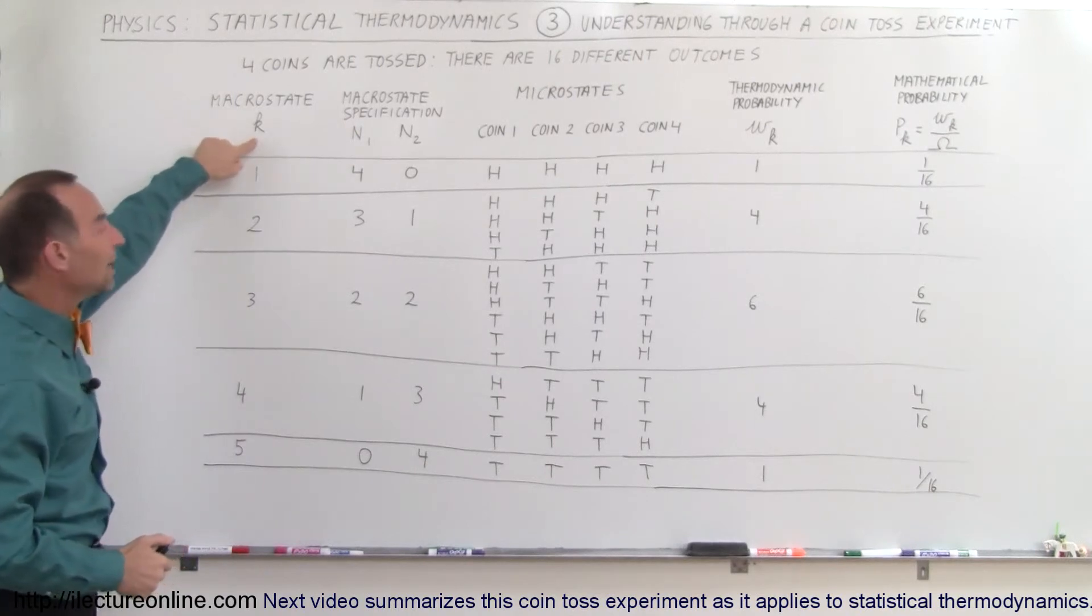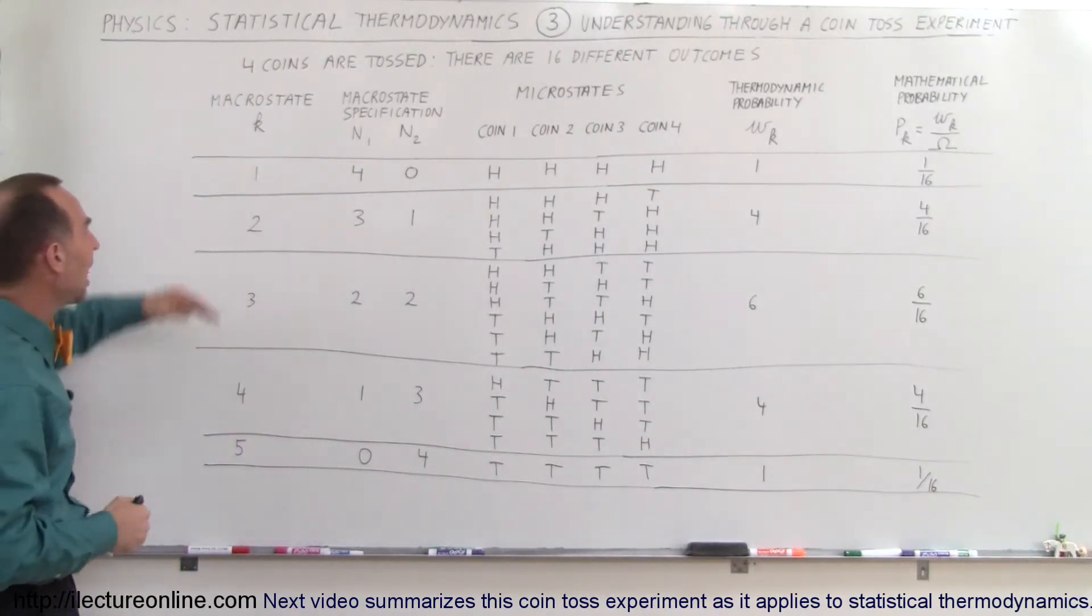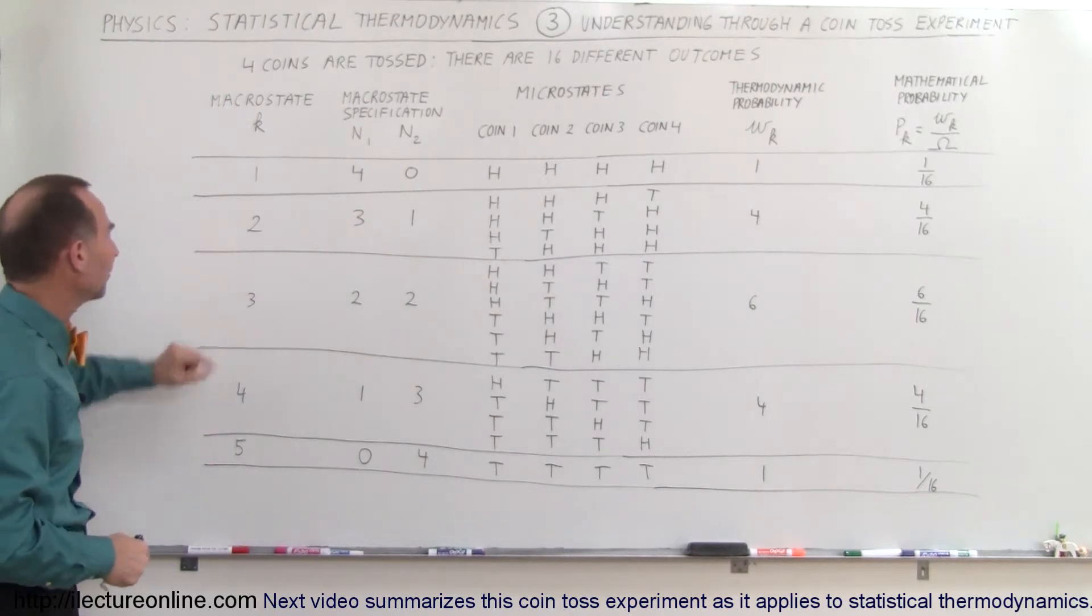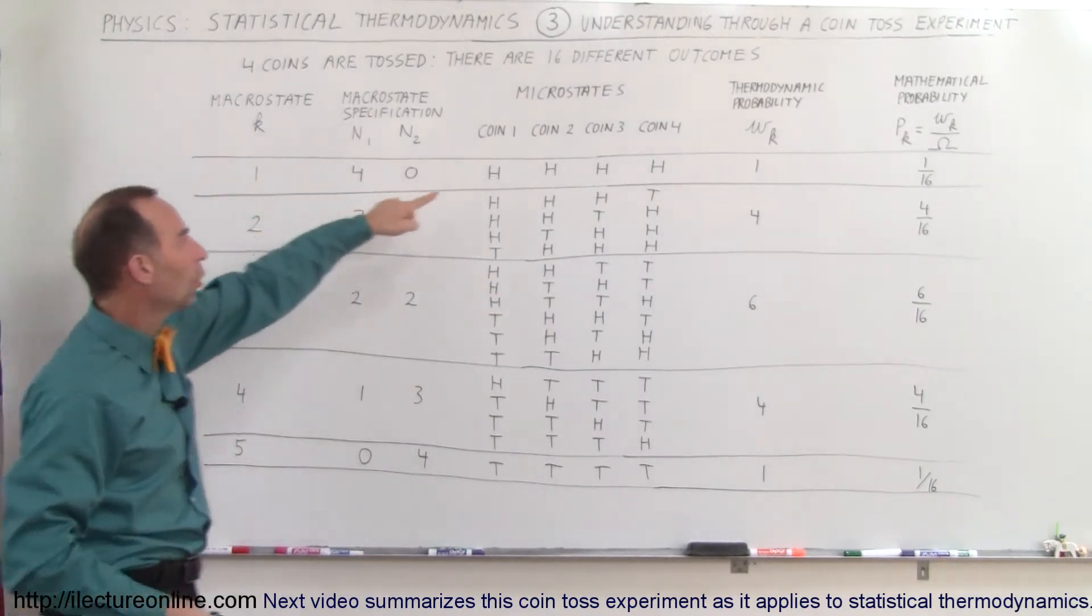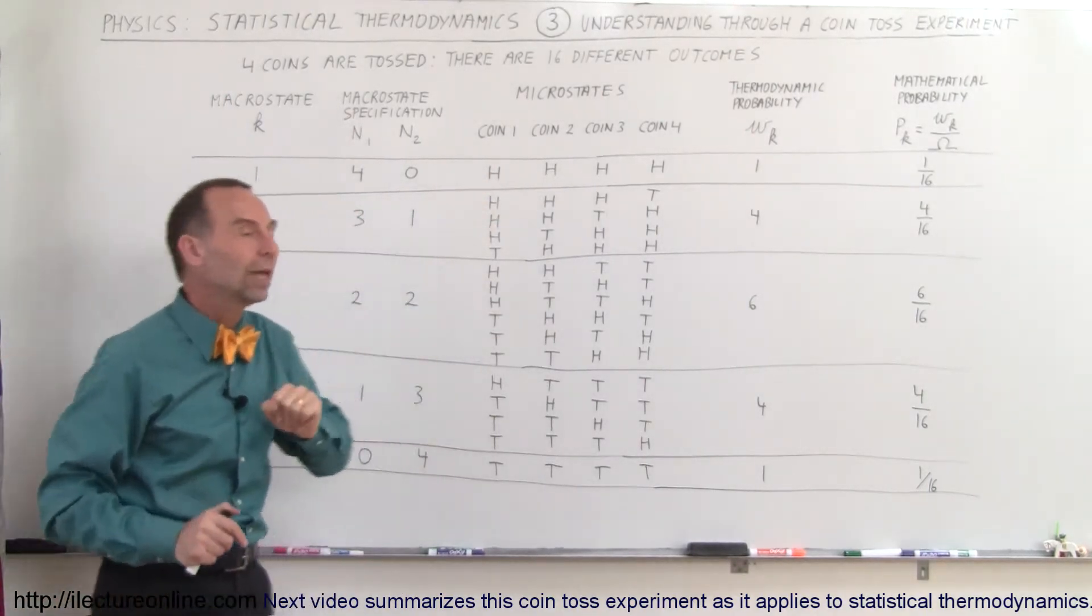We use k denoting the five different macro states: 1, 2, 3, 4, 5. In the first macro state, all four coins come up heads, no tails.